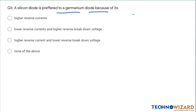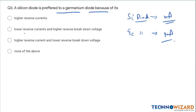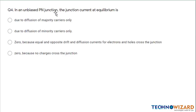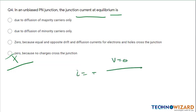Next question: a silicon diode is preferred to a germanium diode because a silicon diode has its reverse current range in nano ampere — remember this. But in a germanium diode they have reverse current range in micro ampere. Therefore option B — they have low reverse current and high reverse breakdown voltage — option B is the correct answer. Next question: in an unbiased junction, the junction current at equilibrium. Note: in the answer key I have given a wrong answer by mistake.